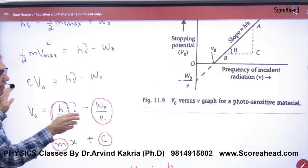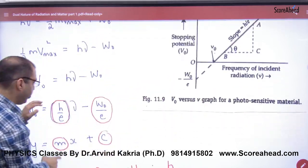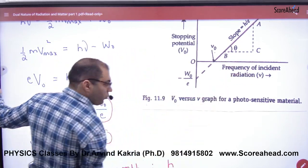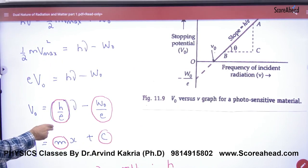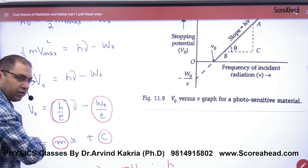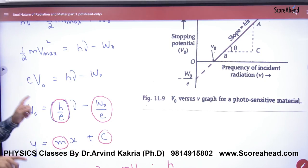Who will make a graph? We put stopping potential V₀ on the Y-axis and frequency ν on the X-axis. Compare it to y = mx + c. So what will it be? A straight line with some intercept.